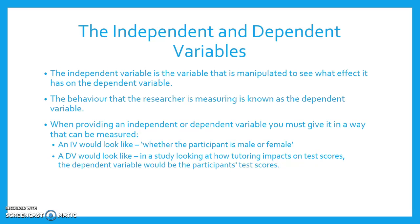When providing an independent or dependent variable in an exam, you must give it in a way that can be measured. An independent variable would look like: whether the participant is male or female — note that it always starts with 'whether.' A dependent variable would look like, in a study looking at how tutoring impacts on test scores, the dependent variable would be the participant's test scores.